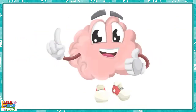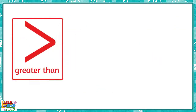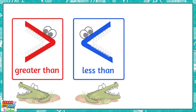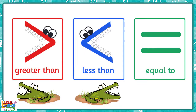Let's quickly revise what we have learned. This symbol is the greater than symbol and we use it to show that one number is greater than another. This is the less than symbol and we use it to show that a number is less than another. Remember to use the strategy to imagine the symbols as a crocodile's mouth — the crocodile would always want to eat the bigger number. Finally, we have the equal to symbol and we use this when the numbers are of the same value.